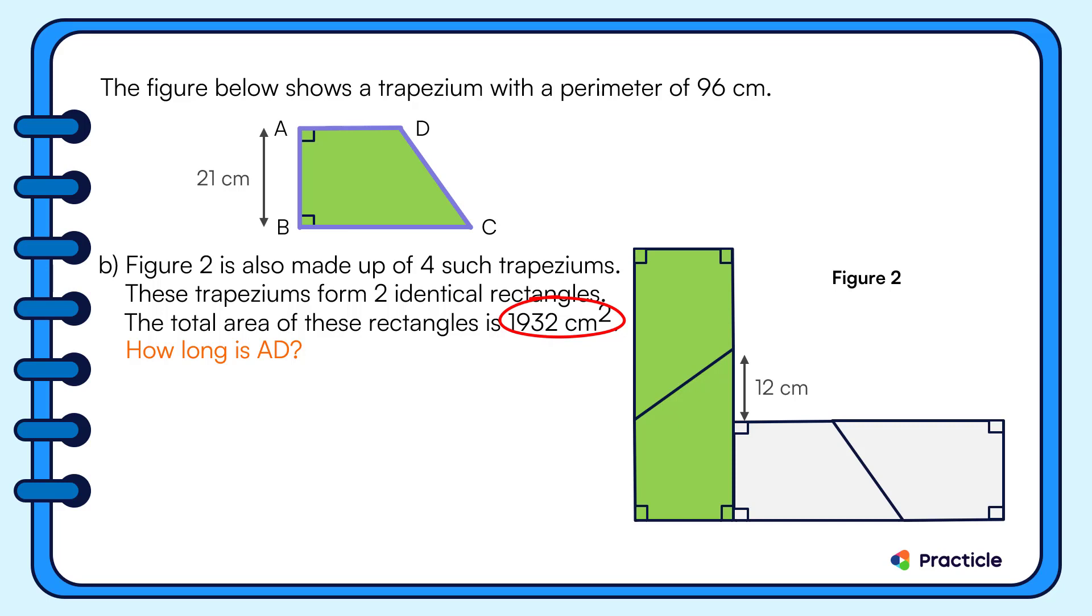When we divide 1932 by 2, we'll get 966. Great! We know that the area of one rectangle is 966 square centimeters. And how is this related to the answer that we have found in part A? Remember that AB is 21 centimeters.